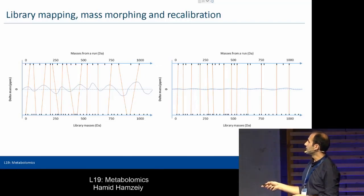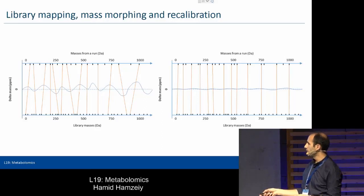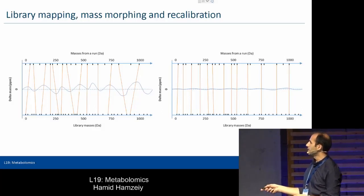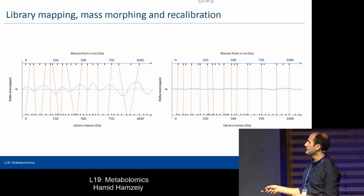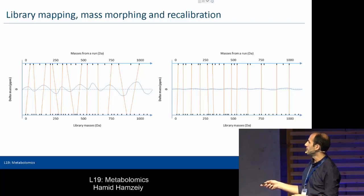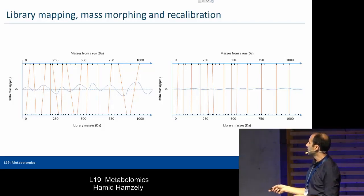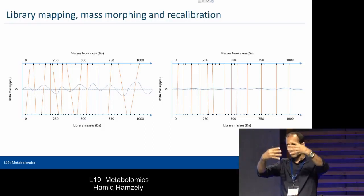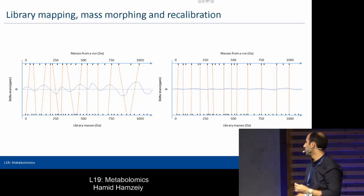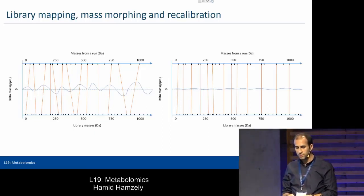Here is how the library mapping works. On the top we have the masses from a run that we have detected, and on the bottom we have the masses within the library. Each little black line is an entry in the library, and each black line here is a feature detected within the run. On the y-axis we have the delta mass — the difference between a feature in the run and one in the library. We try to fit as many of these masses within a run to the masses in the library, then do a recalibration to make these differences as small as possible. The closer they are, the more confident we are in the identification.